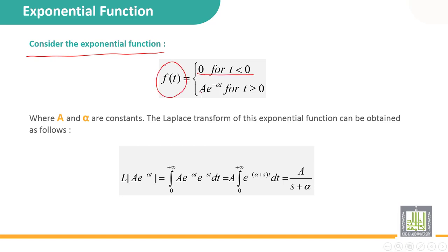And equal to A e^(-αt) for t positive. I can plot first this function f(t) as a function of time. It's like this: before zero, the function should be equal to zero. When time equal to zero...